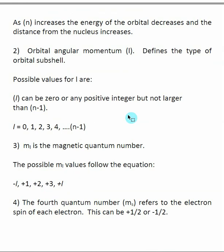For quantum numbers, there are rules. The possible L values for an electron are determined by the n value given. The rule is that L can be zero or any positive integer, but cannot be larger than n minus one. So you start at zero and keep adding one — going zero, one, two, three, four — until you reach n minus one, which is the largest possible L value. N determines the possible L values.